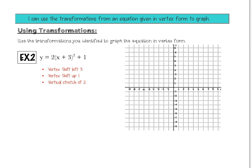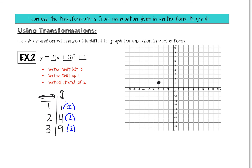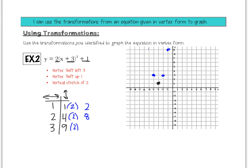For example 2 — shift left 3, up 1, with a vertical stretch of 2 — the new vertex is at (−3, 1). The vertical stretch of 2 doubles all vertical movement: instead of over 1 up 1, I go over 1 up 2; instead of over 2 up 4, I go over 2 up 8. Those points reflect across the axis of symmetry, giving a tall, skinny parabola. Vertex form makes graphing so much faster!